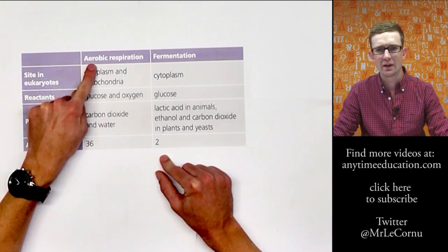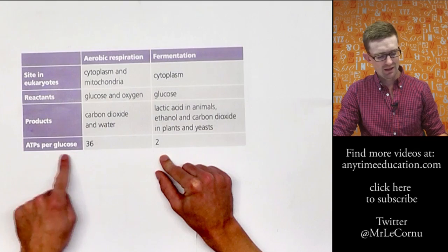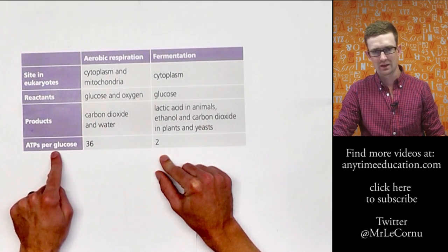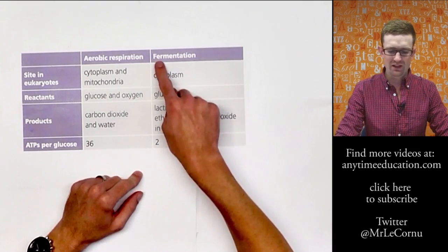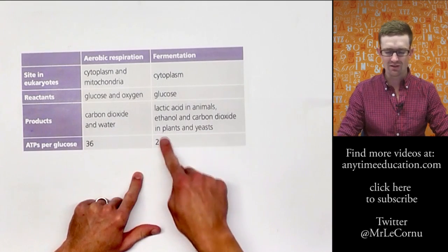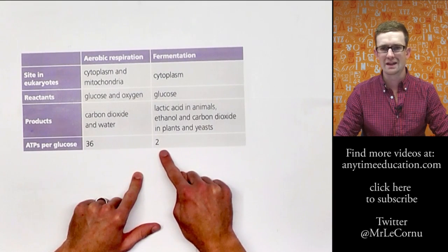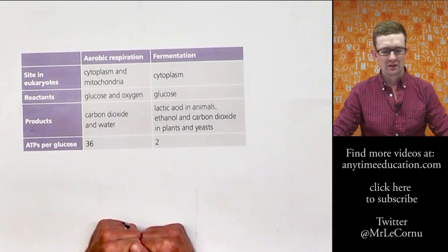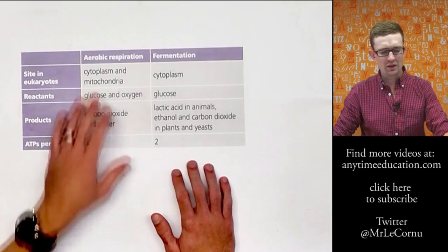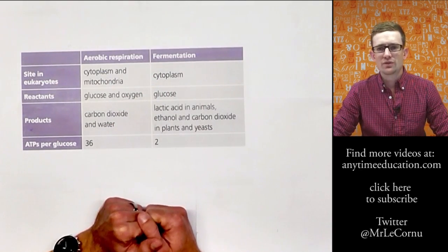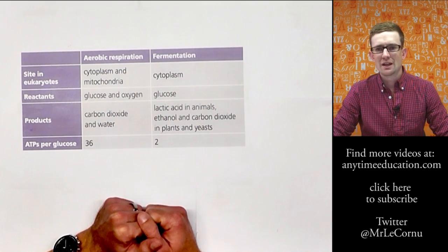The ATPs per glucose molecule shows how much more efficient aerobic respiration is than fermentation. The energy released by aerobic respiration is enough to generate 36 molecules of ATP, which is great. The energy released in fermentation is only enough to generate two molecules of ATP - better than nothing, but far less efficient. So there you have it - a summary of aerobic respiration and fermentation. I hope this video has helped with your understanding, thanks very much for watching.